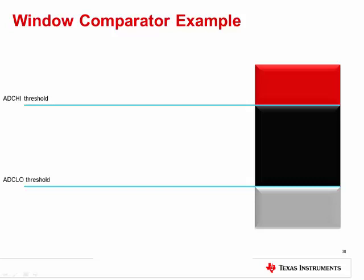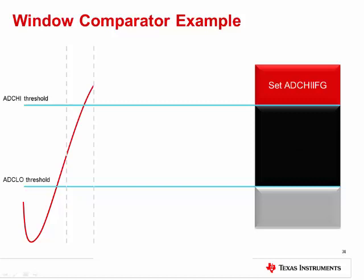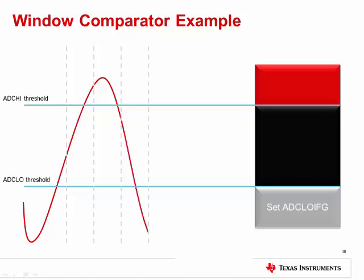Let's quickly step through how this works. The ADC reads a sample that is in between the two thresholds and sets ADC_IN_IFG. The ADC then reads a sample that is above the high threshold, so ADC_HIGH_IFG is set. Then, the ADC reads a sample that is in between the two thresholds and sets ADC_IN_IFG. Next, the ADC reads a sample that is below the low threshold, so ADC_LOW_IFG is set. Then, the ADC reads a sample that is still below the low threshold, so ADC_LOW_IFG is set again.